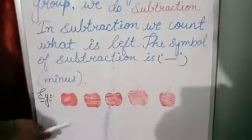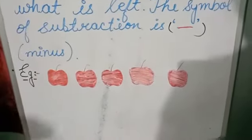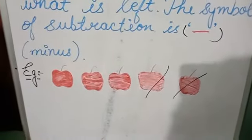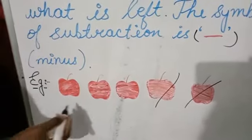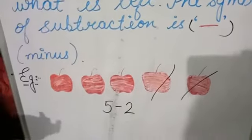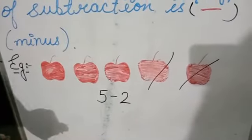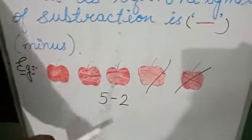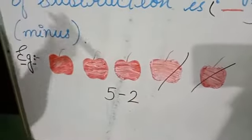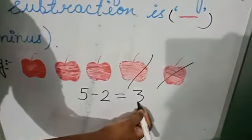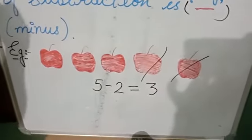Here I have drawn 5 apples. Suppose you are having 5 apples, and you are feeling so hungry and you have eaten 2 apples. Now tell me, how many apples are left? Count it: 1, 2, 3. That means 5 minus 2. You are having 5 apples and you have eaten 2 apples. In subtraction, we count what is left. So 1, 2, 3 — 5 minus 2 equals 3. You are having 3 apples left.